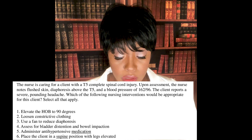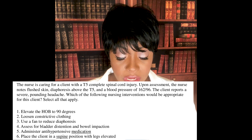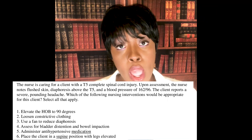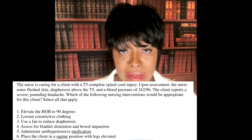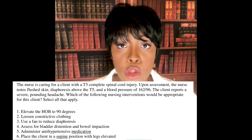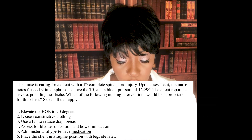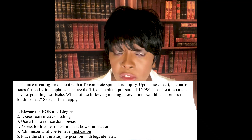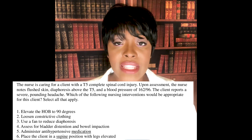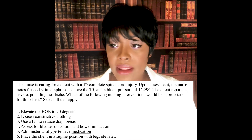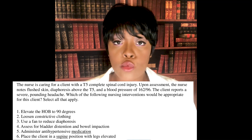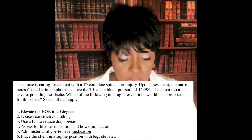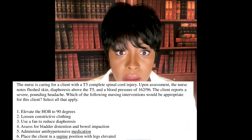Choice one — elevate the head of the bed 90 degrees: absolutely true. Look at that blood pressure, 162 over 96 — we need to get it down, so we elevate the head of the bed. Choice two — loosen constrictive clothing: absolutely, because we're suspecting autonomic dysreflexia, a medical emergency. Any noxious stimuli can trigger it, so this patient should not have any constrictive clothing or anything pressing against their skin. We do not want any tactile stimulation on this patient.